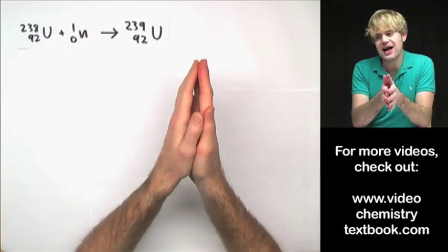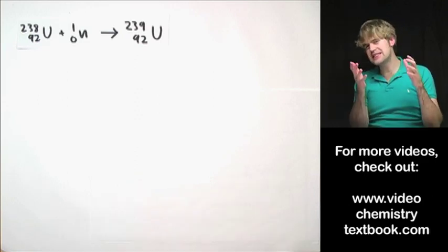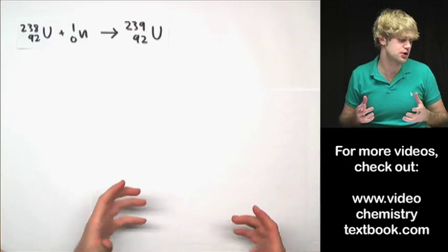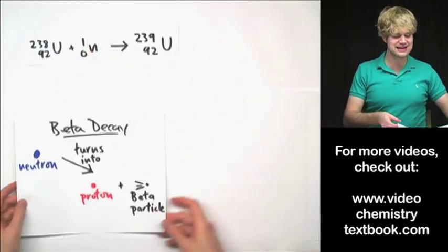But it turns out that Uranium-239, it's unstable. It doesn't like its life very much. It doesn't have the right number of neutrons and protons.